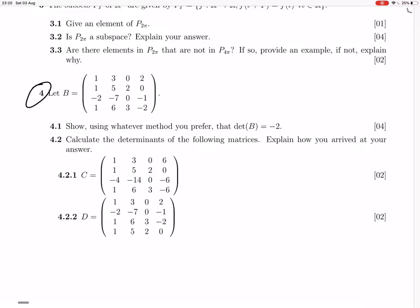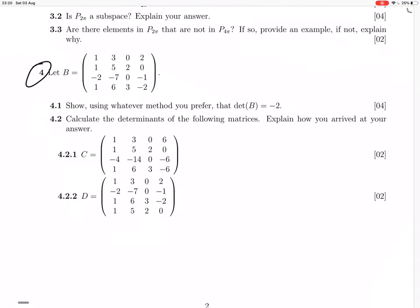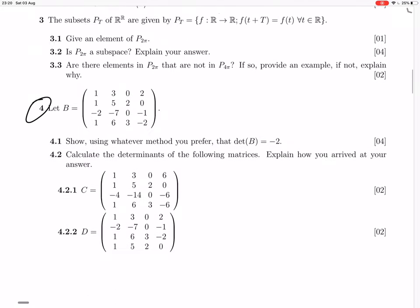Okay, question four. So they give us this matrix B, and they say we need to calculate the determinant of it is minus 2. Okay, so let's just do that. We'll use Gauss reduction, that's the way I like to do it.